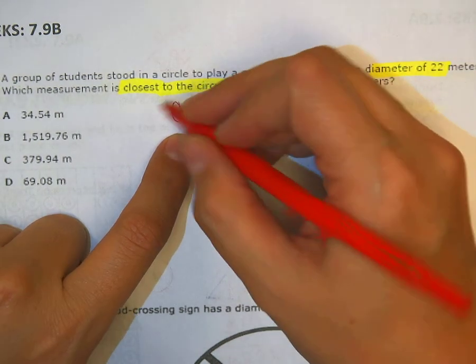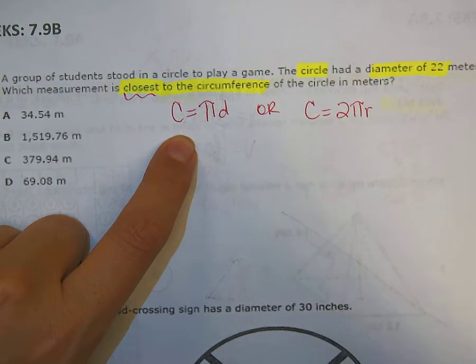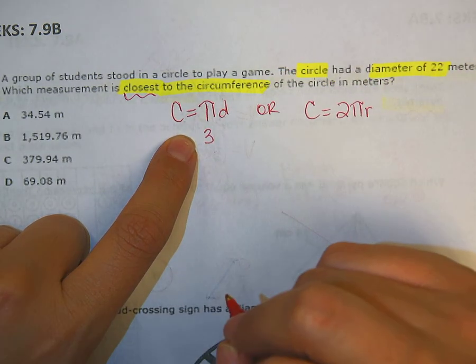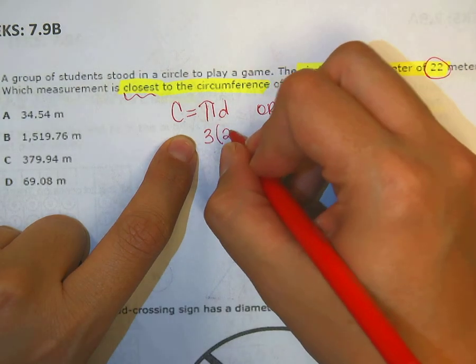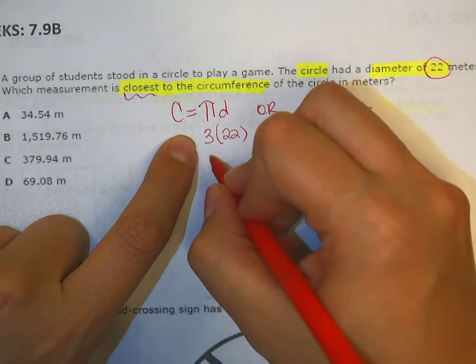So because it says closest to, and because it's STAAR, I'm going to use 3 for pi. So 3 times my diameter, which is 22. 3 times 22 makes 66.